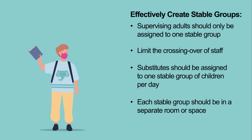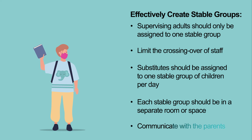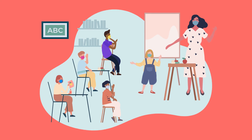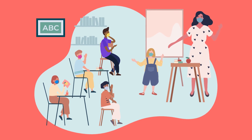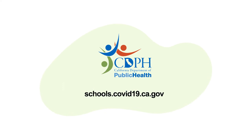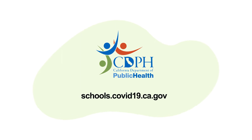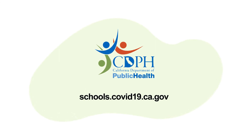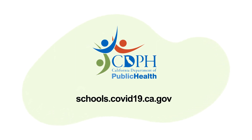Think beyond the classroom when creating stable groups. Assign children who live together or carpool together in the same cohort. Make sure families understand the impact of stable groups beyond the school day by communicating with the parents. Together, we can help our kids get back into elementary school classrooms safely. Visit schools.covid19.cagov for up-to-date information.